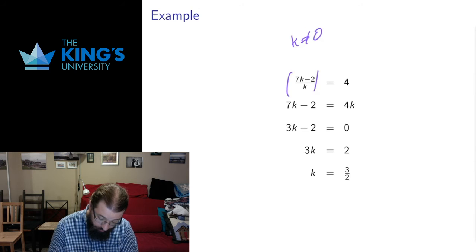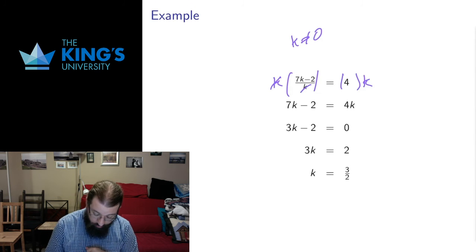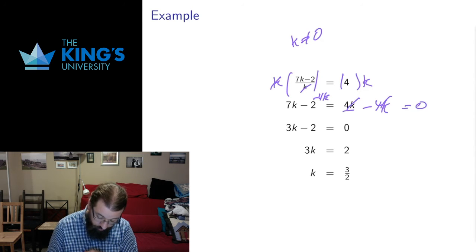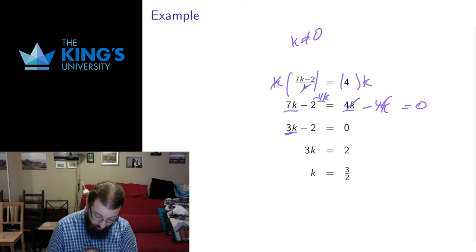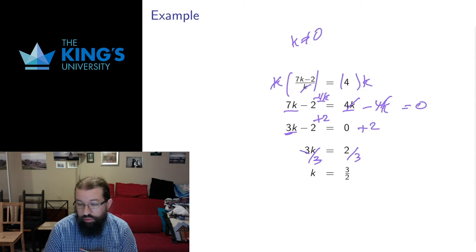Then the k is going to cancel off here. That will give me 4k over here. Then I can subtract 4k from both sides of the equation. The 4k minus 4k is going to give me 0. 7 minus 4 is 3. Then I can add 2 to both sides to get rid of the negative 2. Then I can divide both sides by 3. And I get that k equals 3 halves.